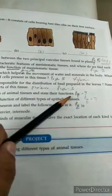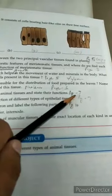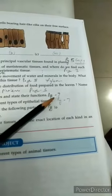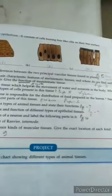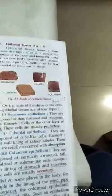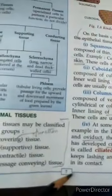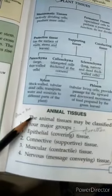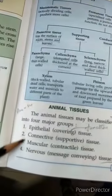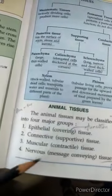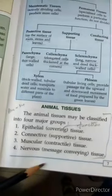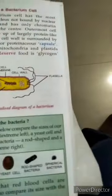Name the various types of animal tissues and their functions. On page number seven, the names of all animal tissues are given and their functions are given in brackets. It is very easy.